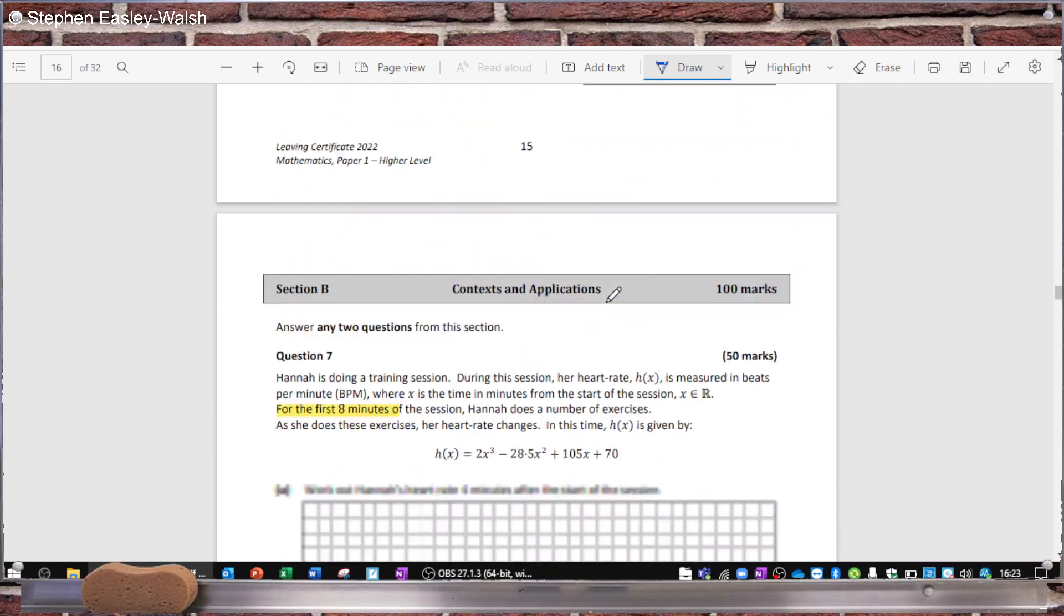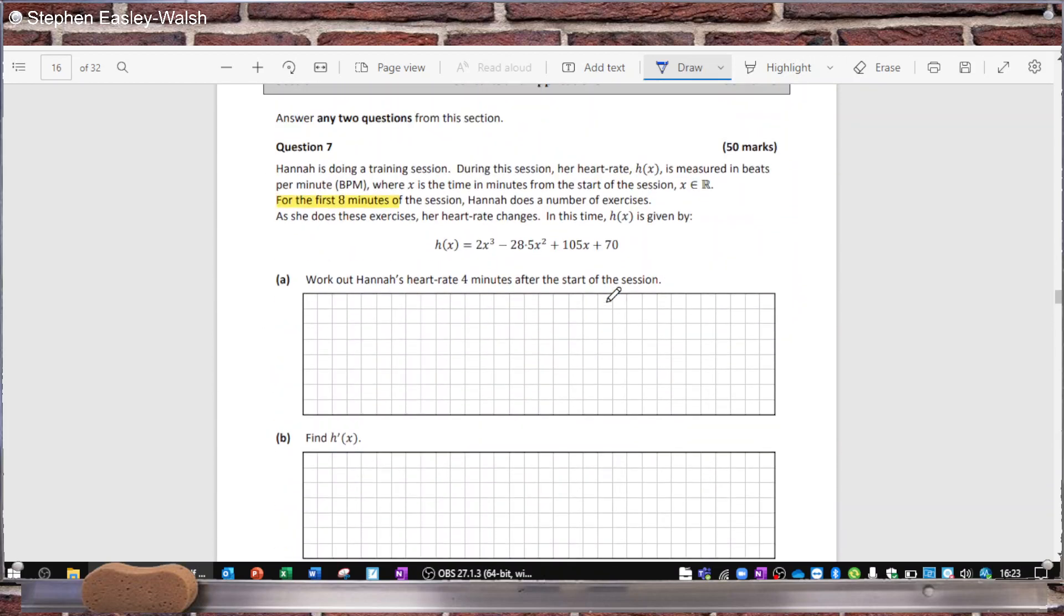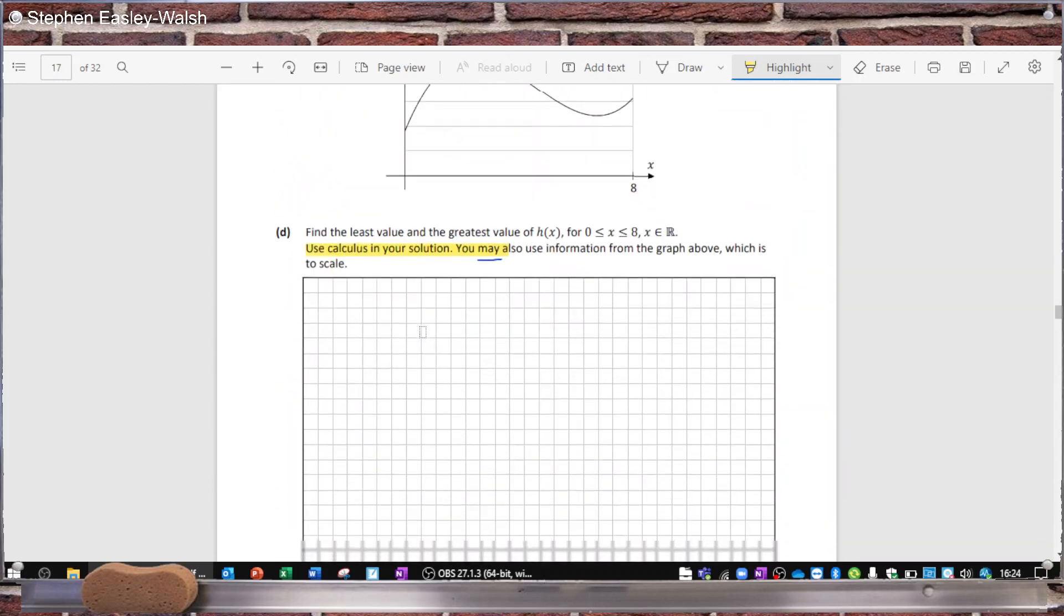The first issue was here, Question 7. So you're told Hannah is doing a training session and during the session her heart rate H(x) is measured in beats per minute where x is the time in minutes from the start of the session. For the first eight minutes of the session, Hannah does a number of exercises. As she does her exercises, her heart rate changes in this time. In this time it's given by this formula - in other words, this cubic equation is only modeling her time for the first eight minutes.